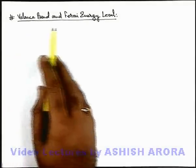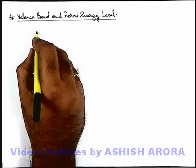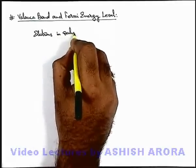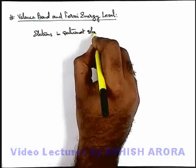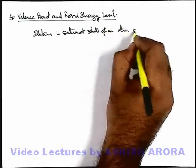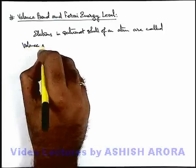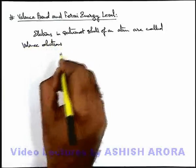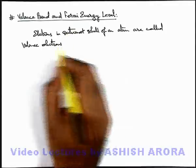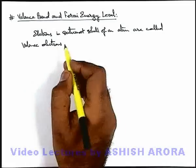Let's discuss valence band and Fermi energy level. Electrons in the outermost shell of an atom are called valence electrons, which we all know participate in valency or bond formation. That's why these electrons in an atom are called valence electrons.